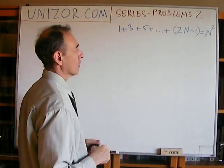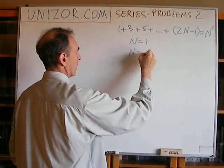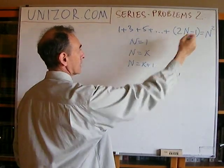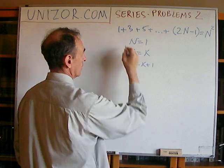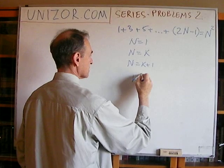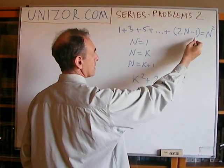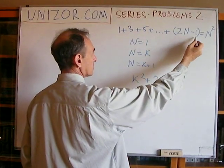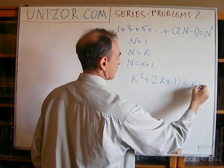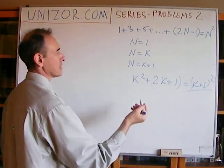Obviously it's true for n equals 1. Now we assume that for n equals k it's true. So when n is equal to k plus 1, we have one extra element, which is the sum of the first k elements — which we assume is k squared — plus the next element, which is 2k plus 1. If the kth element is 2k minus 1, then the next odd number would be 2k plus 1. And obviously this is (k+1) squared, which basically proves our formula.